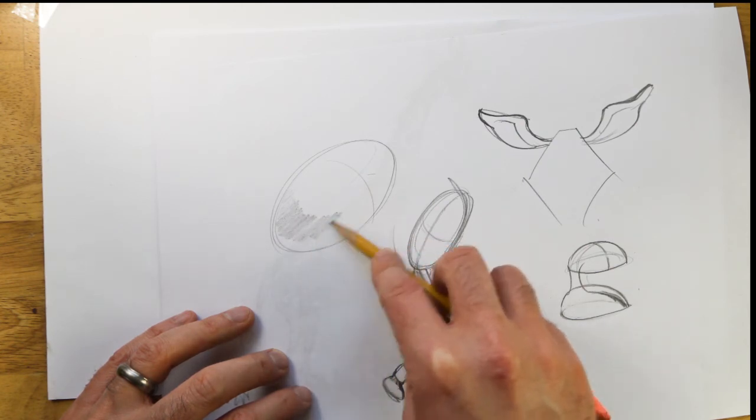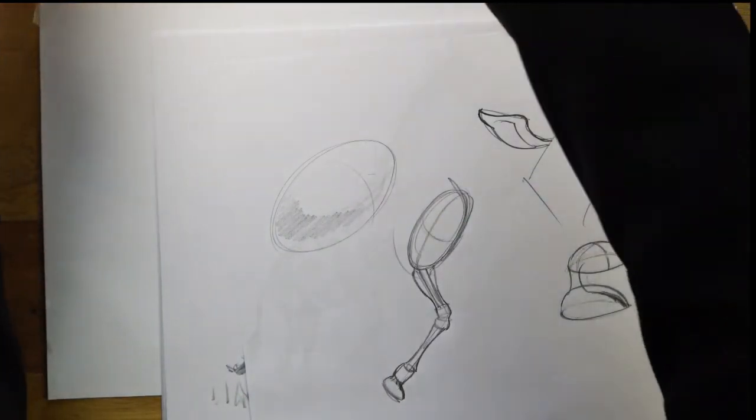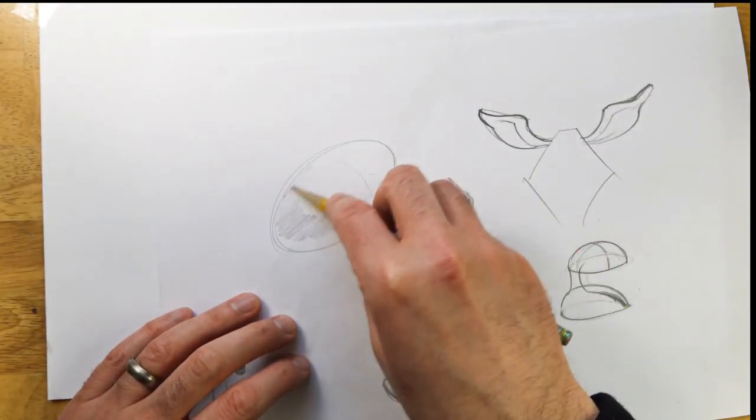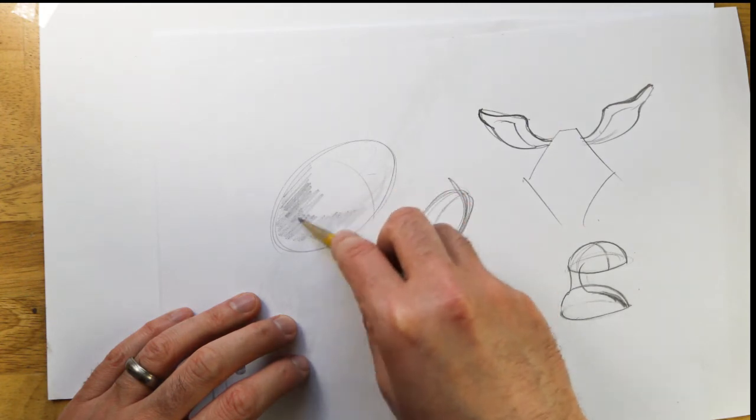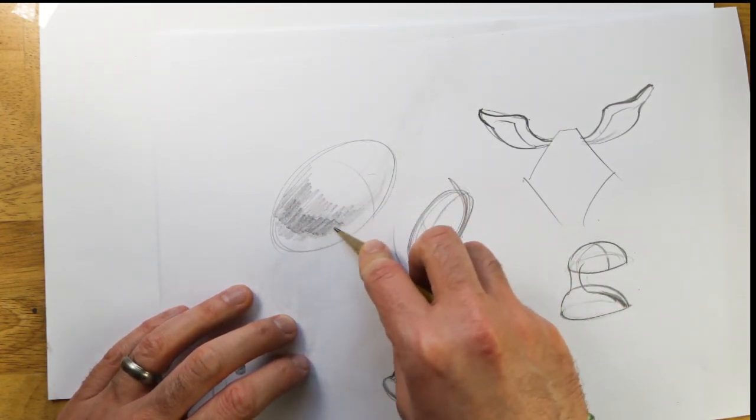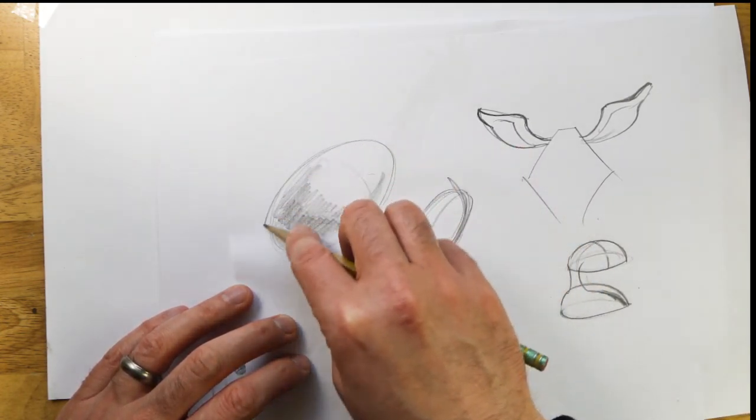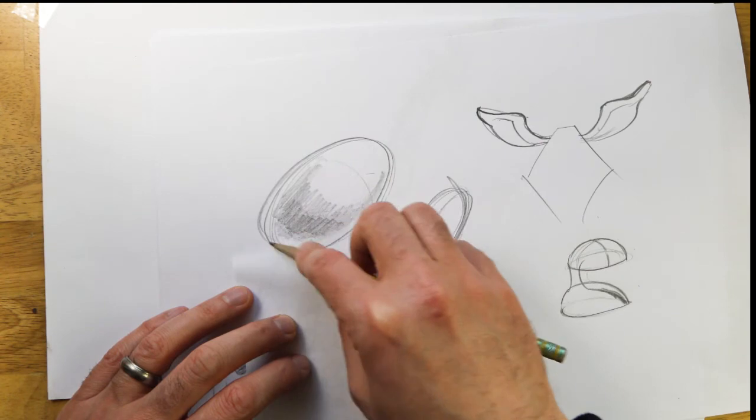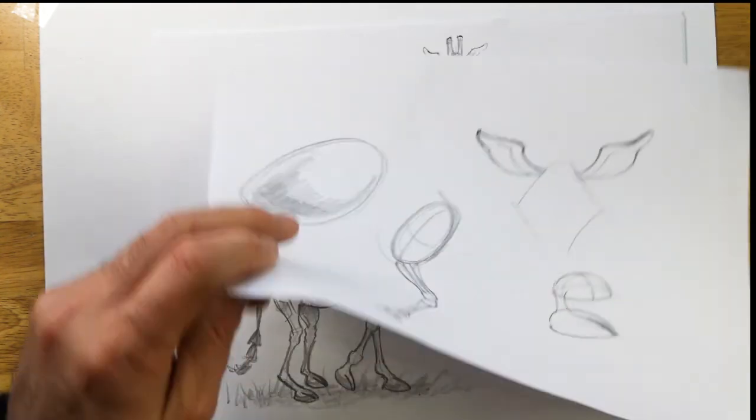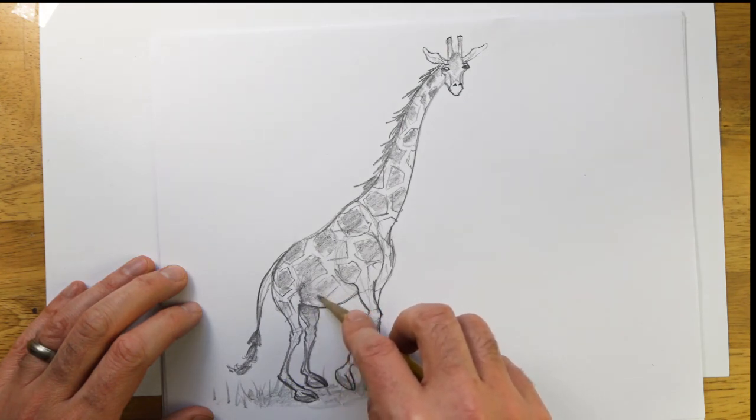So when we shade, we think about each part of the body as a different object. So if it looks like a cube, we'll shade it in as we would shade in a cube. If it's a sphere, then we'll shade it in that way.